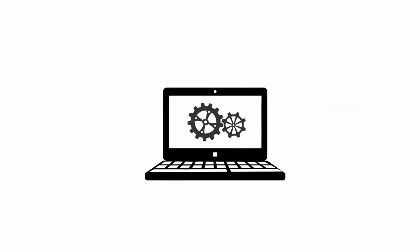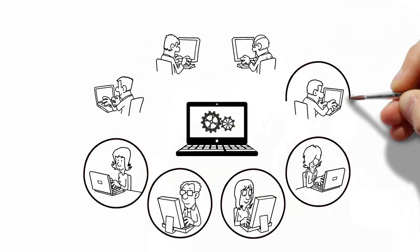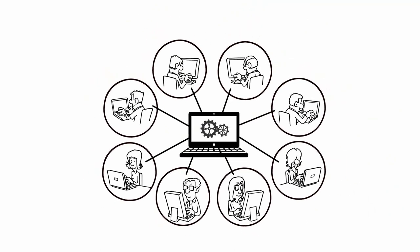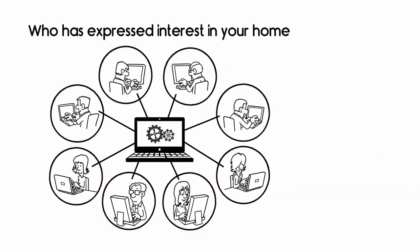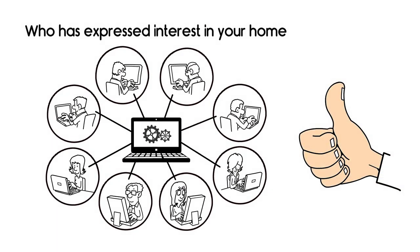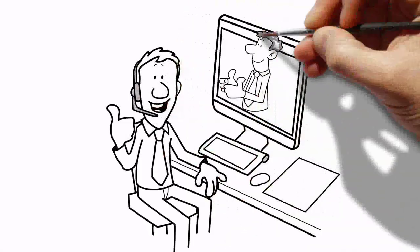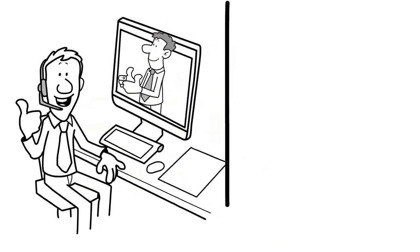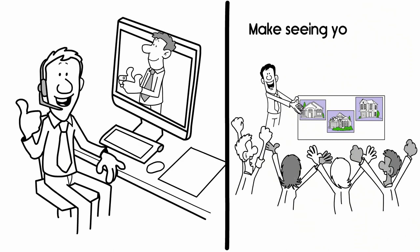For up to a year, our artificial intelligence system will consistently make engagement attempts with every person who has expressed interest in your home until she gets a thumbs up or a middle finger. When someone gives us the thumbs up, our goal is to make seeing your home as easy as possible.